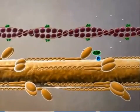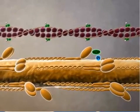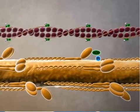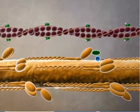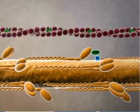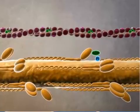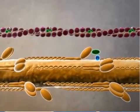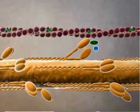In response to an action potential, the sarcoplasmic reticulum within a muscle fiber releases calcium ions. These ions bind to a protein complex, causing it to shift and expose the myosin binding sites. The myosin head then binds to actin, and the crossbridge is established.